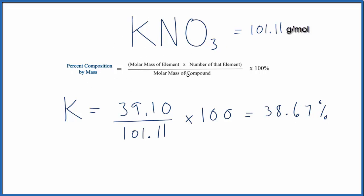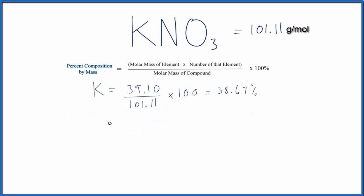That's our percent composition by mass for the K in KNO3. We do the same thing for the nitrogen and we find that the percent composition is 13.86 percent.